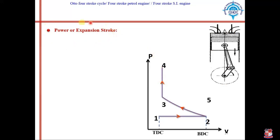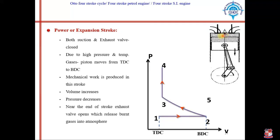The next stroke is the power or expansion stroke. At the end of the previous stroke, the piston is at top dead center and will now move toward bottom dead center. In the previous stroke we created high pressure and temperature conditions by igniting the fuel and air mixture. Both the inlet and exhaust valves are closed. Due to the high pressure and temperature of the gas, the piston is pushed downward from top dead center to bottom dead center. In this stroke, mechanical work is produced.